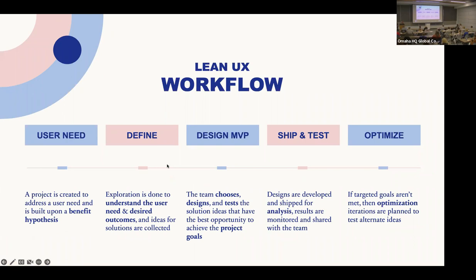Let's look at how a project workflow could be created based on the ideologies of Lean UX. At a high level, the first step is to understand the user need — that's when your benefit hypothesis is created. The second step is to define the opportunity and start defining the outcomes you want to pursue. The third step is to design the MVP, where the team works together to choose, design, and test solution ideas. Fourth is shipping and testing — the designs are developed, shipped, and tested for analysis. And finally, you plan to optimize: if you haven't met your goals, you plan enhancement iterations.